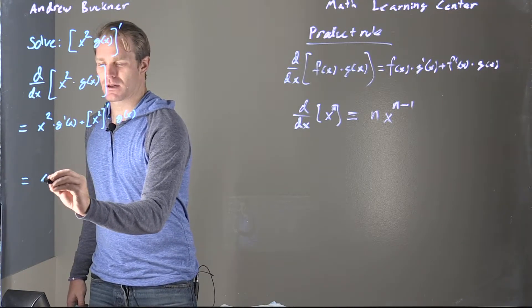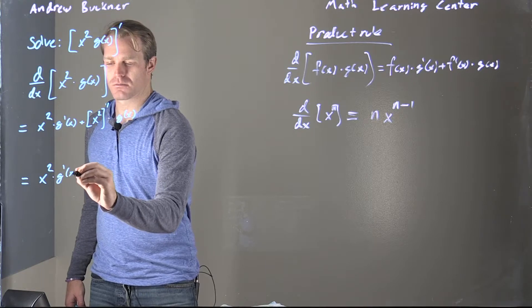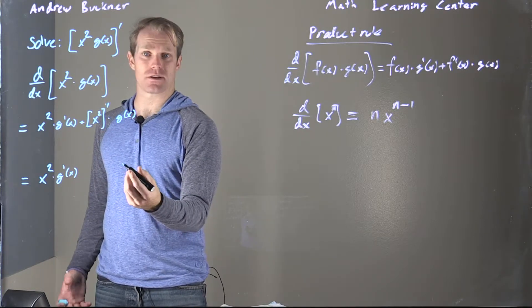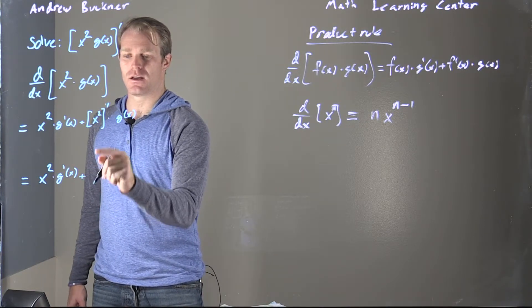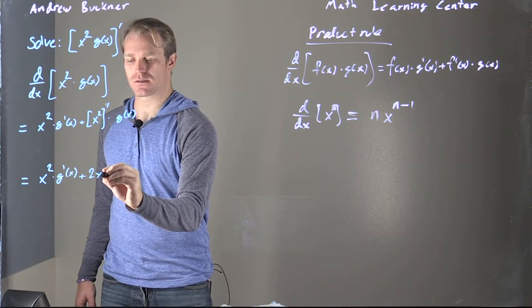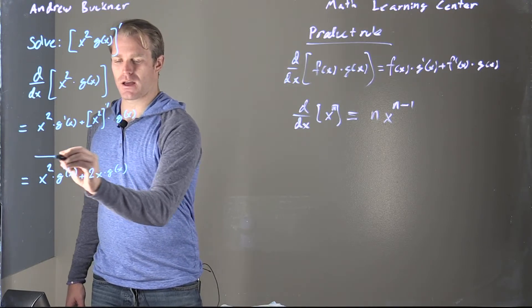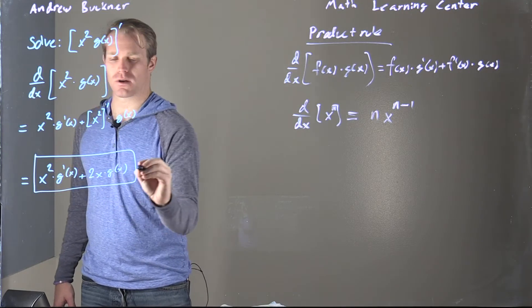So for my final answer here, I'm going to have x squared multiplied by g of x prime, or g prime of x, however you say that. Then I'm going to do that power rule here. So I'm going to have that 2x g of x multiplied together as my final answer for this problem here.